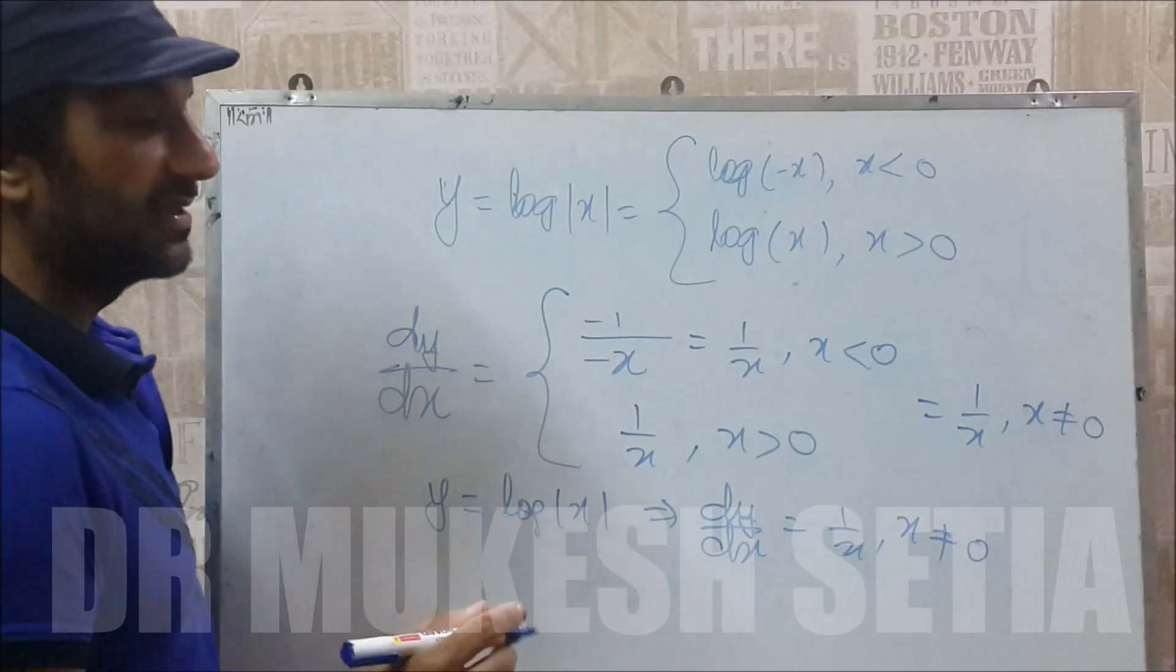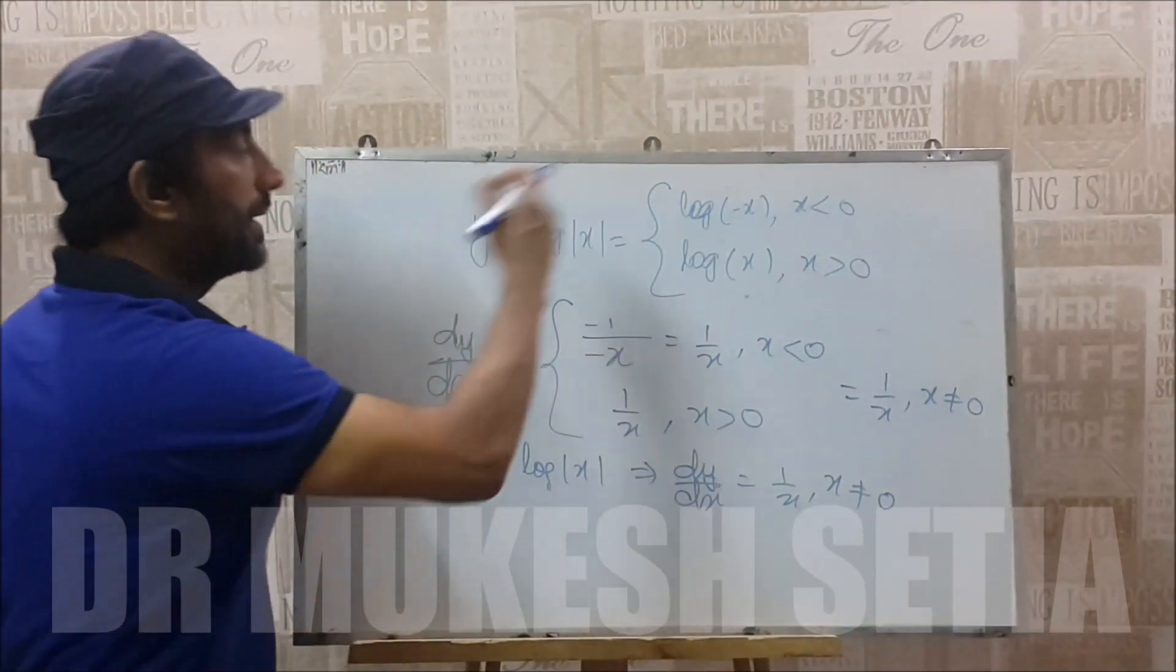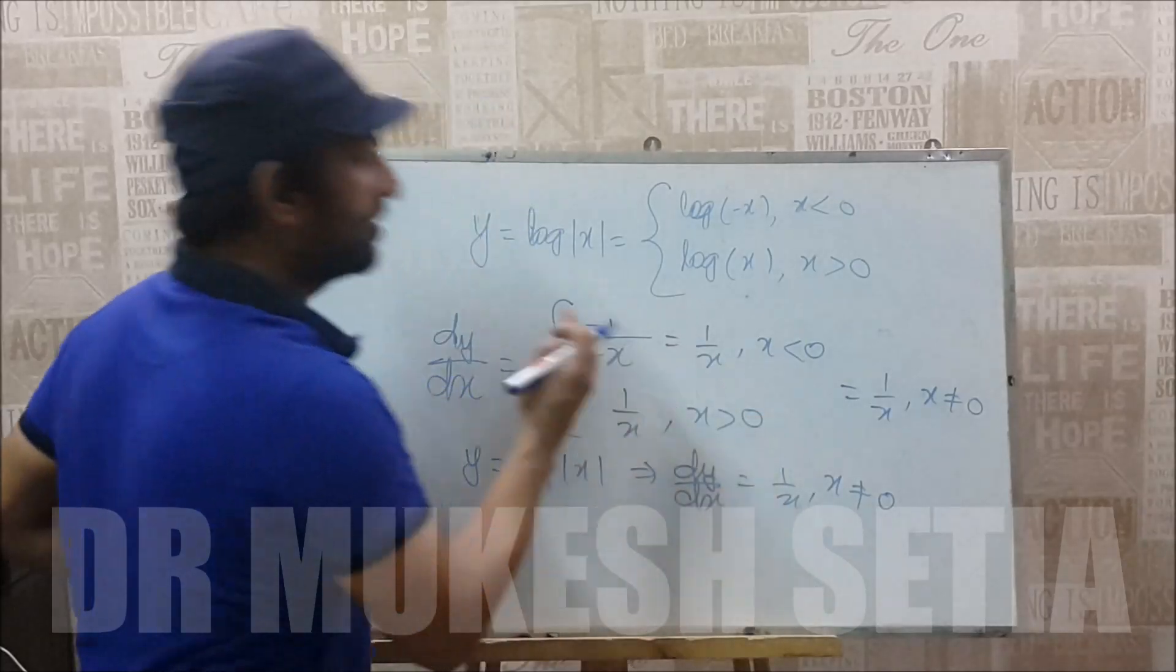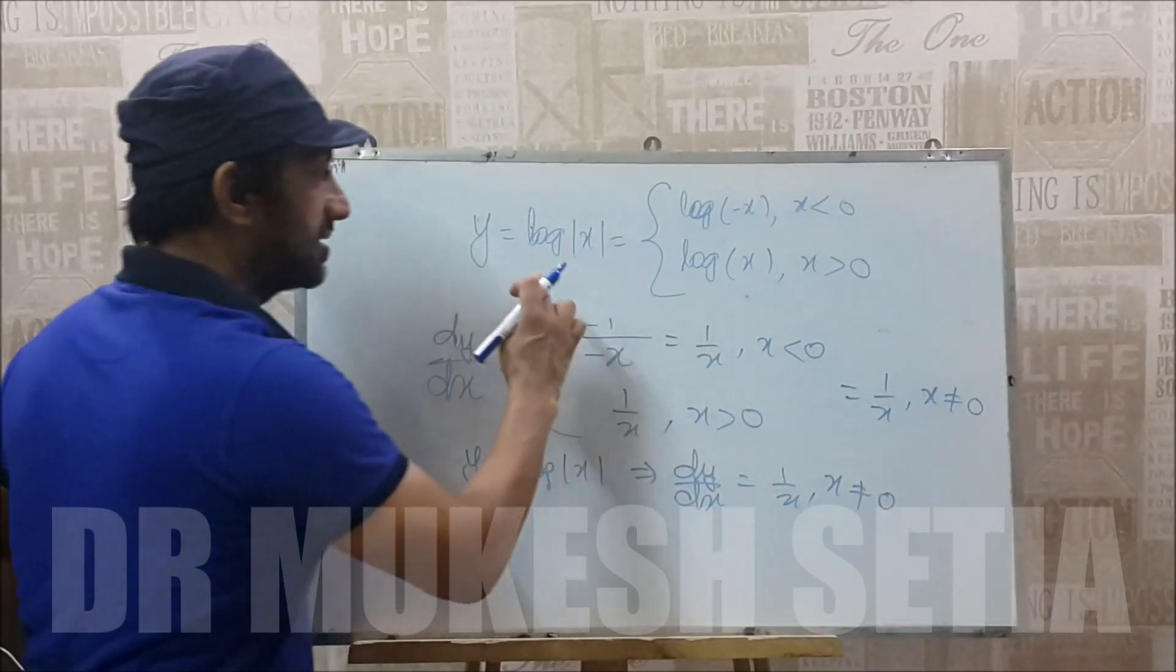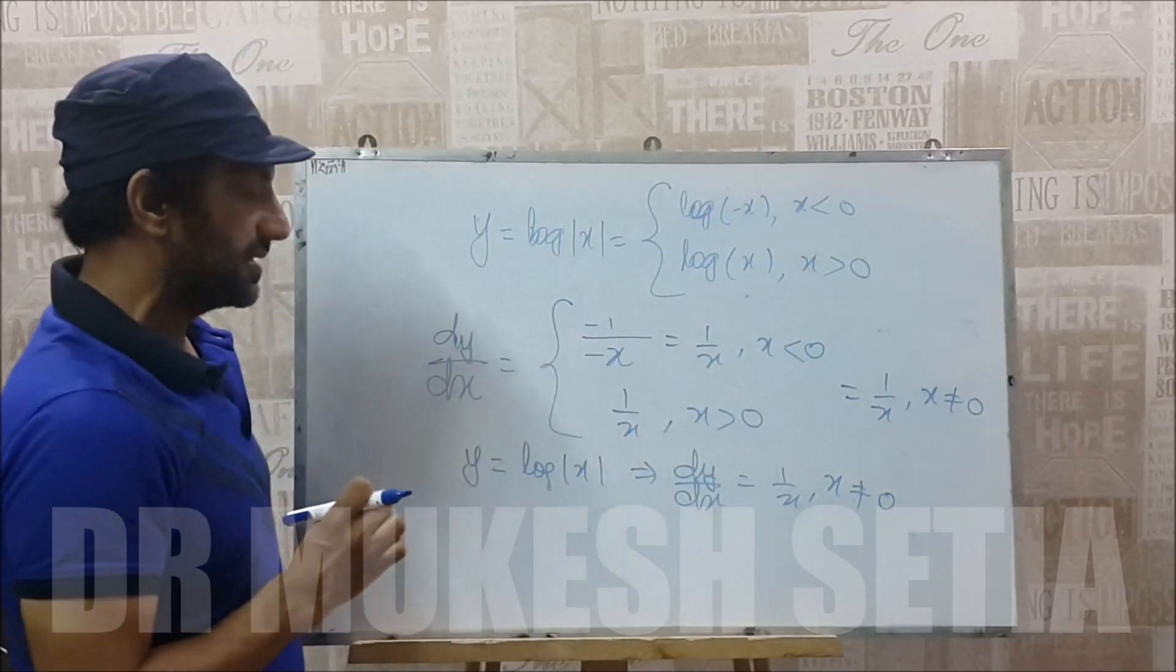And many are surprised that why the integration of 1 by x is not log x. It is log mod x. That's why the integration of 1 by x is log mod x, because with both the branches the answer is always 1 by x.